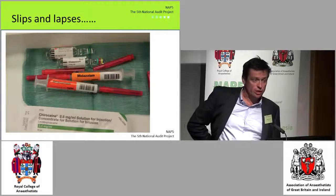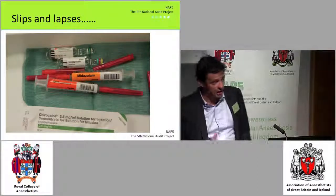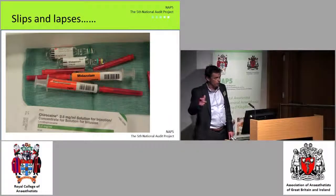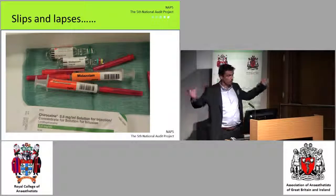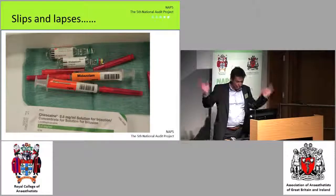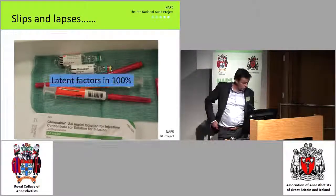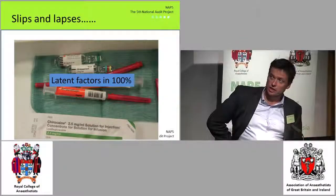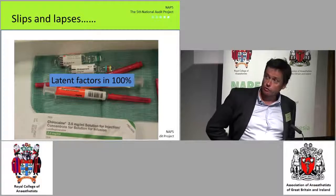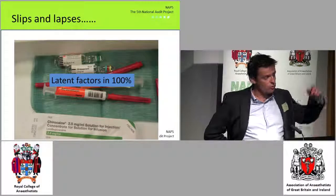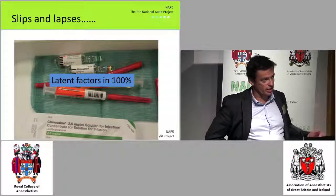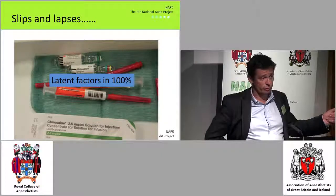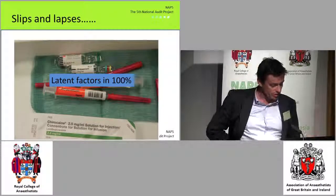What about slips and lapses? You've got someone picking up the wrong syringe or labelling the wrong syringe and giving the wrong drug — clearly culpable. But in all 17 of the 18 cases, all of which involved neuromuscular blockers, there were contributory factors outside the individual. It wasn't simply a matter of someone saying, 'I just picked up the wrong syringe' — there were other things going on.